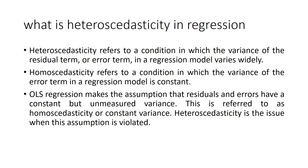Ordinary least squares regression makes the assumption that residuals and errors have a constant but unmeasured variance. This is referred to as homoscedasticity or constant variance. Heteroscedasticity is the issue when this assumption is violated — if your error term variance is not constant, that is a problem and results would be biased.